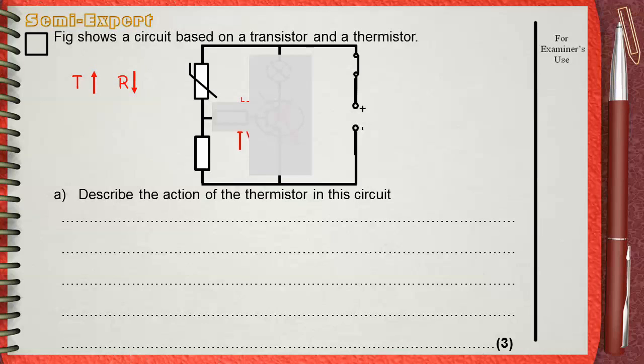So its voltage also decreases. This makes the voltage of the resistor increase. Consequently, VBE, the voltage across the base and the emitter of the transistor, will also increase.